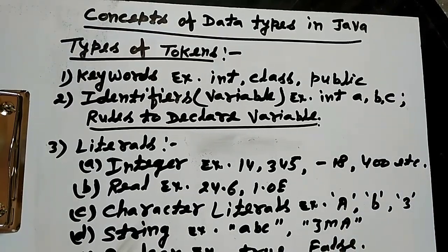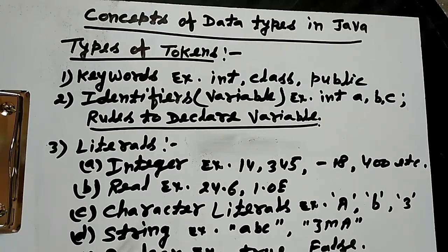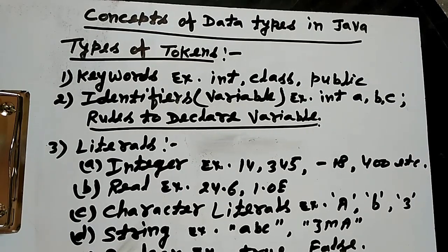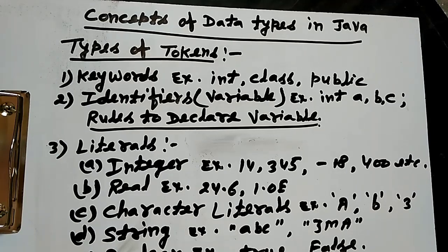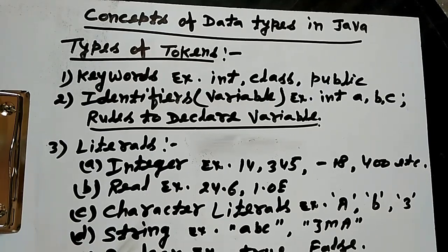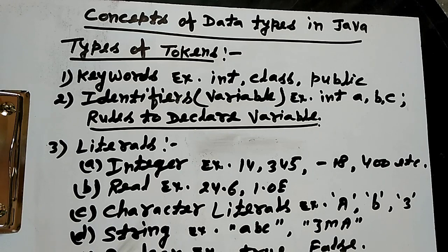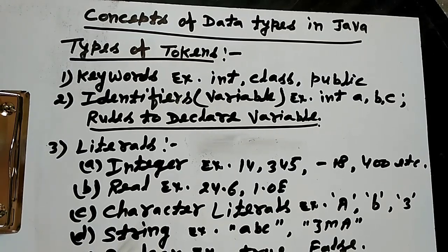There are some rules to declare variables. First one is identifier must be meaningful. Second, first letter must be alphabets.